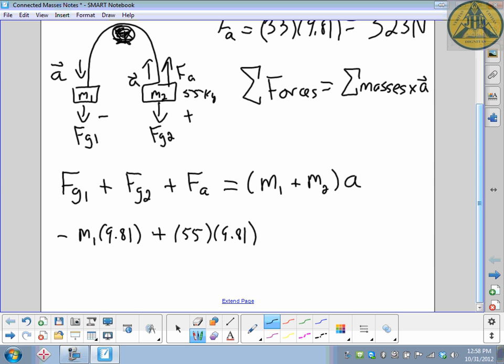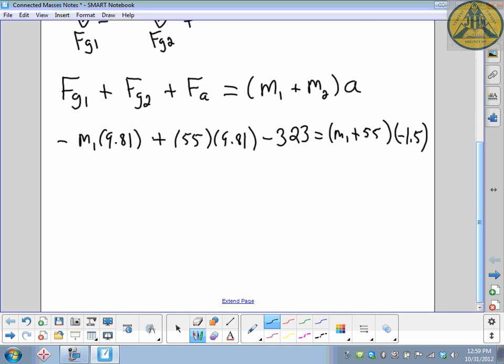Now we put our numbers in and take into account direction. Fg1 is negative: m1 times acceleration due to gravity 9.81. Fg2 is positive: 55 kilograms times 9.81. Before I write plus, I have to look very carefully at my directions. That applied force is acting in the negative direction, so that's a negative 323. That equals the two masses added together times an acceleration of negative 1.5. The acceleration is pointing to my negative sign, the force applied is pointing to my negative sign, so that's why they're negative in my equations.